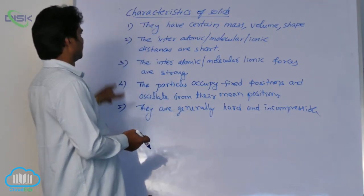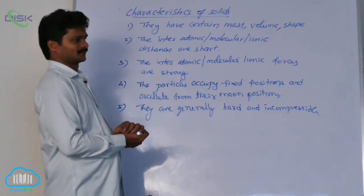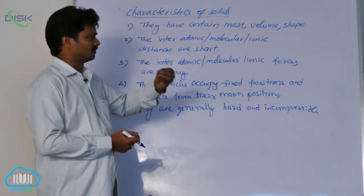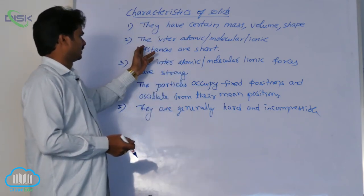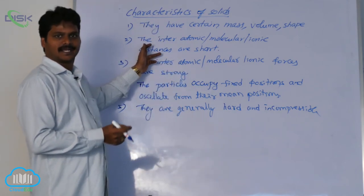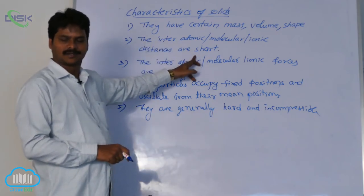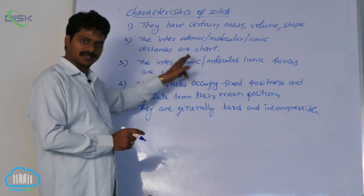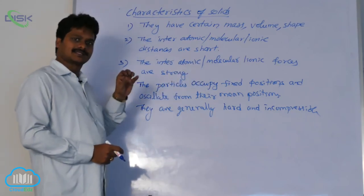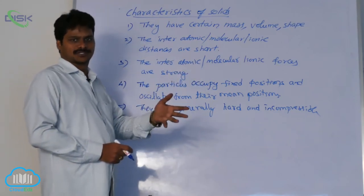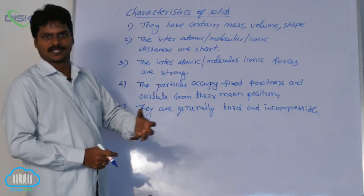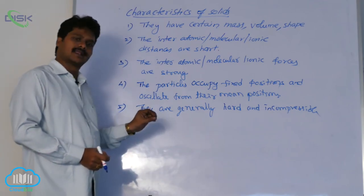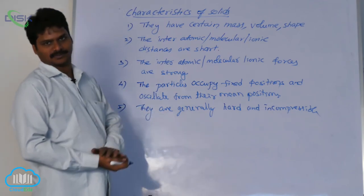These are the main characteristics of solids. They have certain mass, volume, and shape. Their interparticle distances are very short and their interparticle forces are very strong. The particles have fixed positions but oscillate about their main positions. And lastly, solids are generally hard and incompressible.